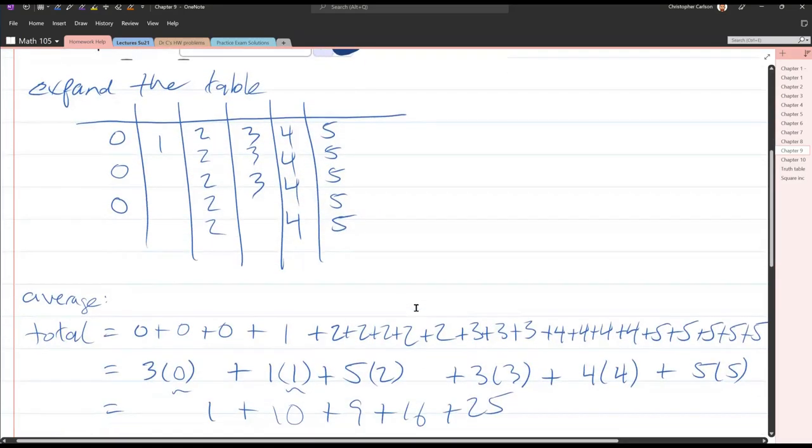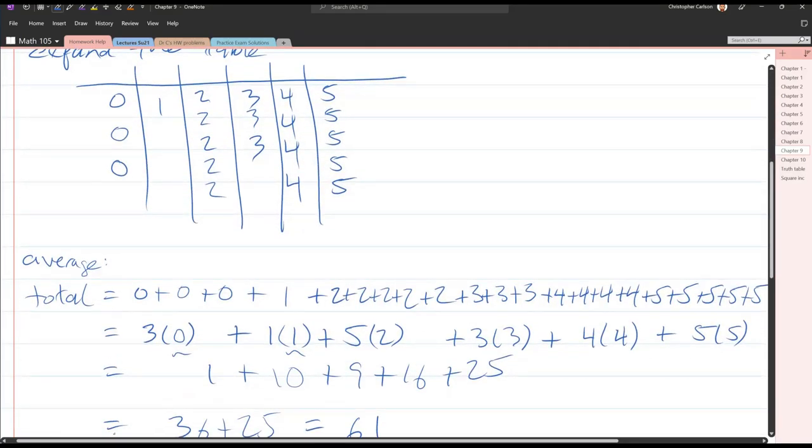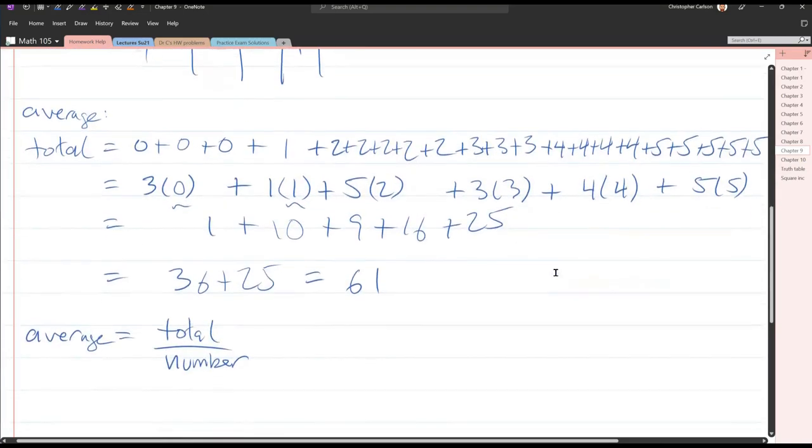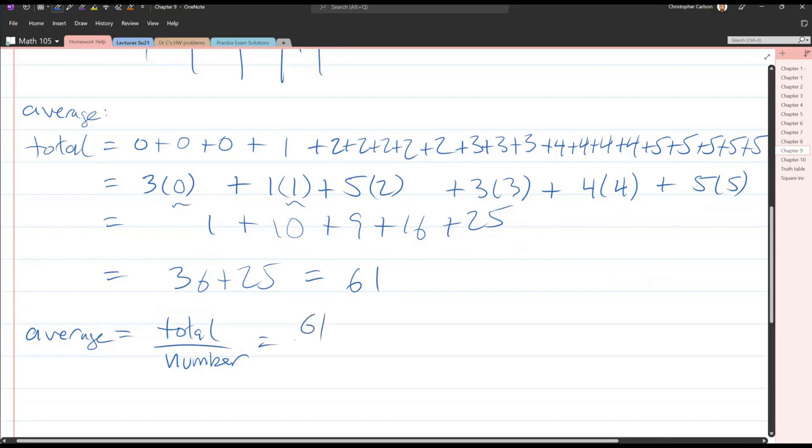I hope that's right. Let me count: 1, 2, 3, 4, 5, 6, 7, 8, 9, 10, 11, 12, 13, 14, 15, 16, 17, 18, 19, 20, 21. Alright, got 21 a second time. So 61 over 21 is the average.